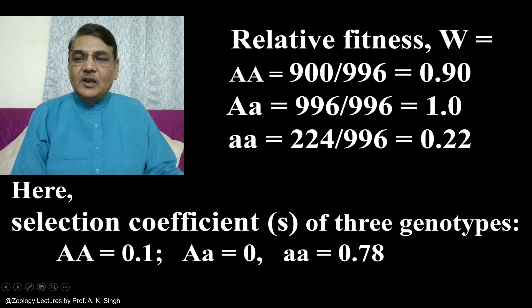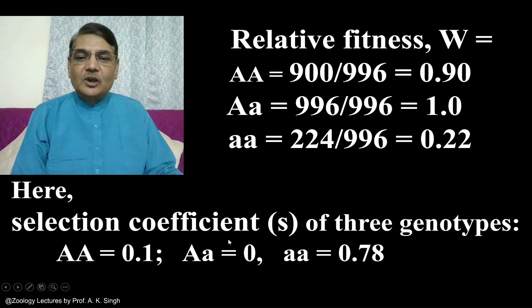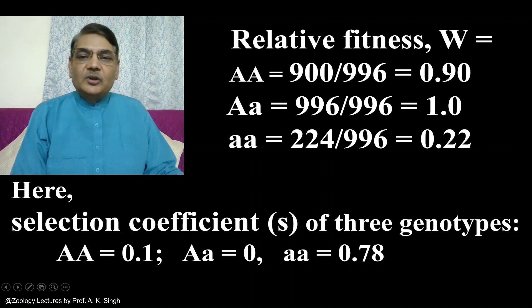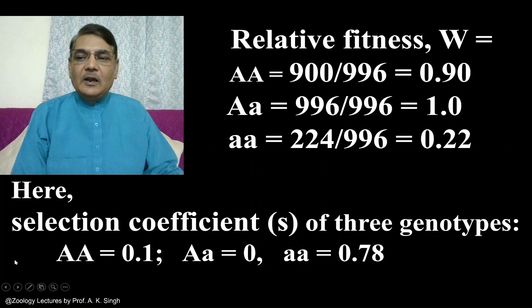As stated, the selection coefficient indicates the deleterious effect of a specific genotype. The AA genotype has a deleterious effect of 10%. The heterozygote Aa does not leave any deleterious effect, meaning this genotype is quite good for the survival of individuals. The aa genotype has a very high selection coefficient of 0.78, meaning its deleterious nature is very high at nearly 78%. This is how you calculate relative fitness and selection coefficient for different genotypes.